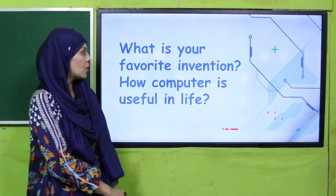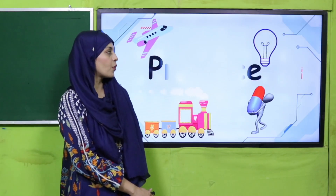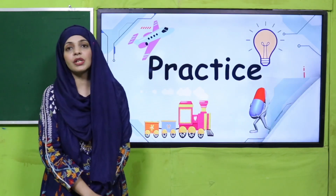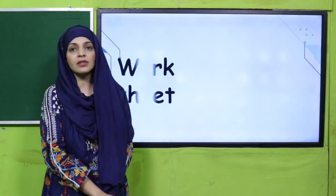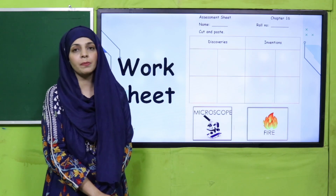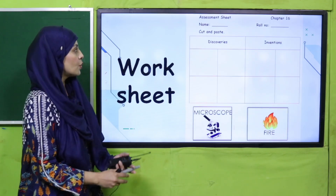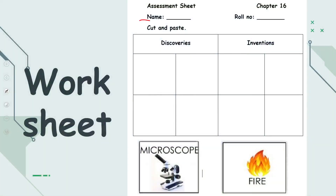Very good. Now it is time for practice. You can download this worksheet from the description box below this video, or get it in print form from your teacher. Write down your name and roll number, then cut and paste. Some discoveries and inventions are given here.